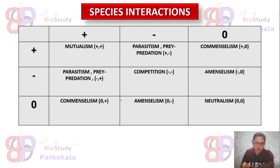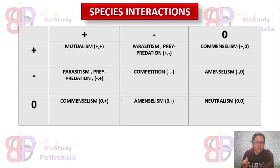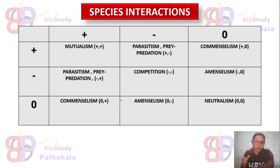Before starting this topic, we have to know about species interactions. Species interactions are of two types based on the involvement of two individuals. If two individuals are from the same species, this is known as intra-specific interaction, while if they are from two different species, it is known as inter-specific interaction.